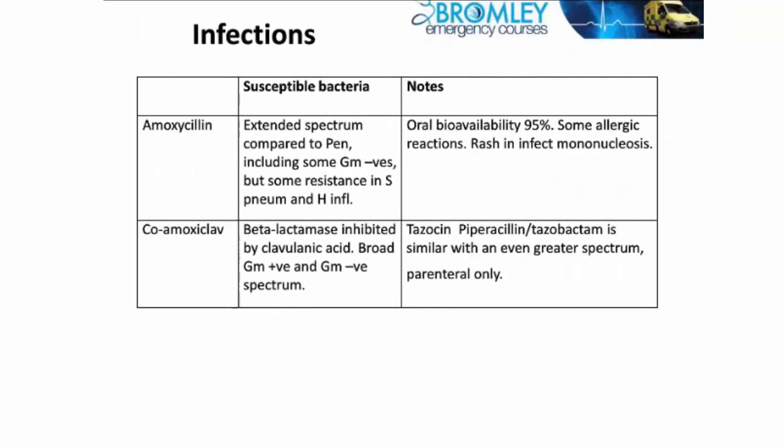Some of the modified penicillins: amoxicillin is a synthetic penicillin, similar to ampicillin. Ampicillin is more poorly absorbed than amoxicillin, so we tend to give amoxicillin orally, but both have exactly the same action if given intravenously. It has an extended spectrum, meaning it has some action against some gram negatives. However, there is some resistance among some strep pneumoniae, which is a gram positive, and among some Haemophilus, which is a gram negative.